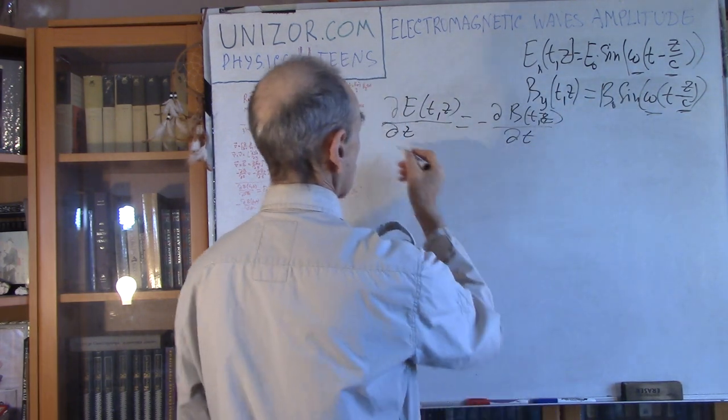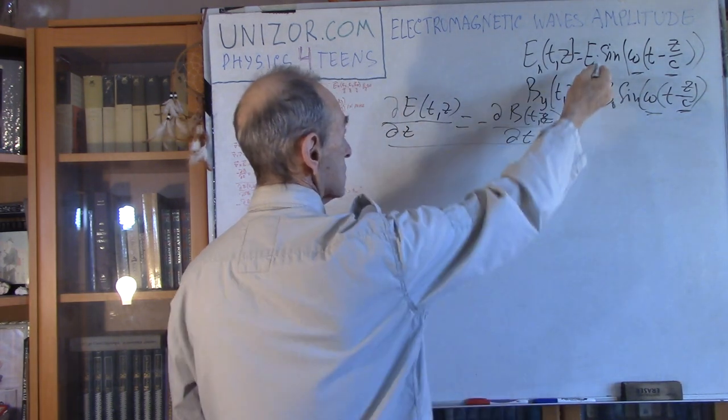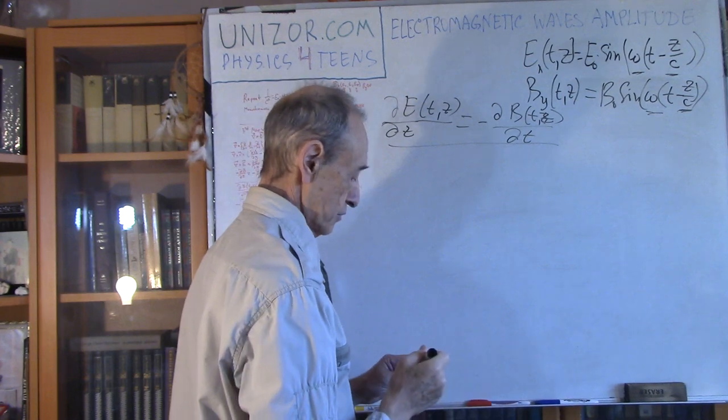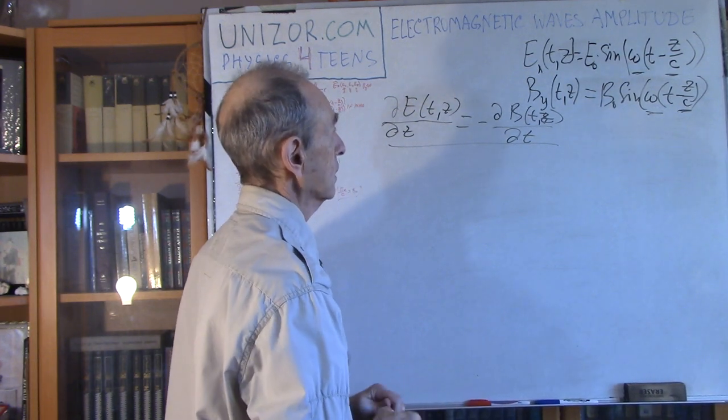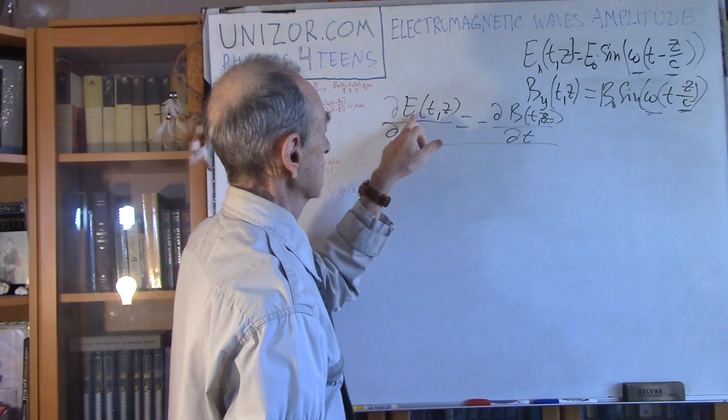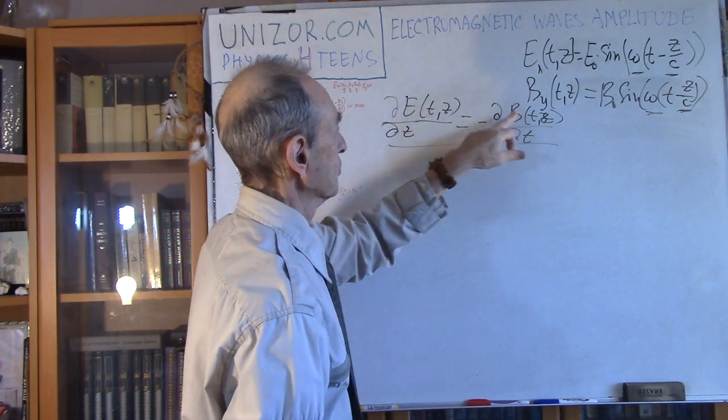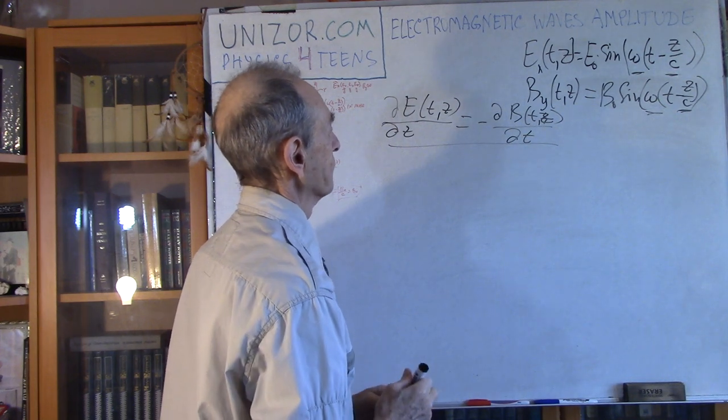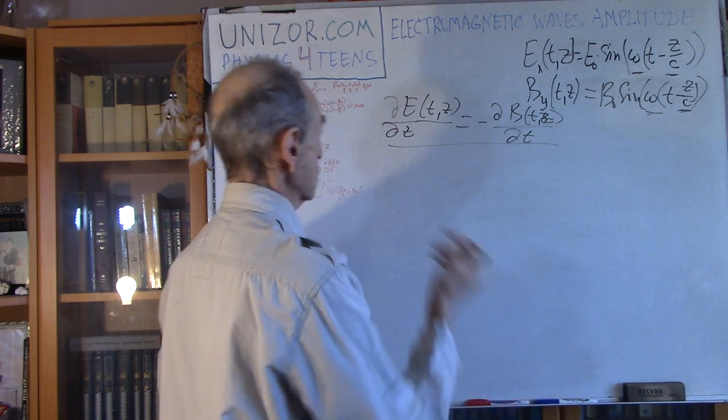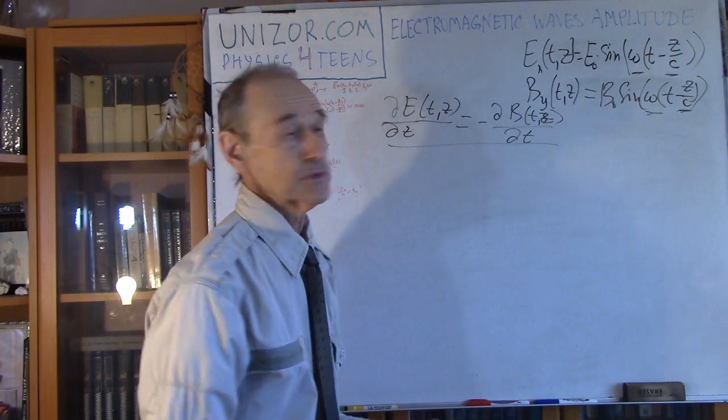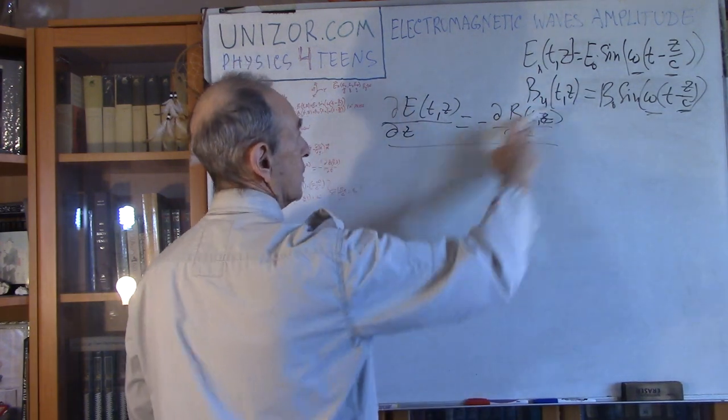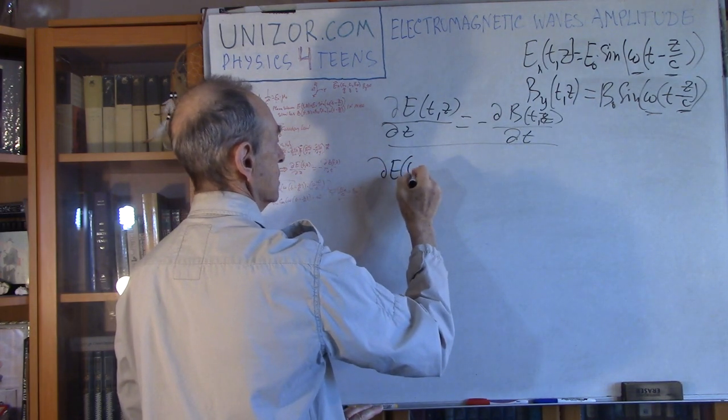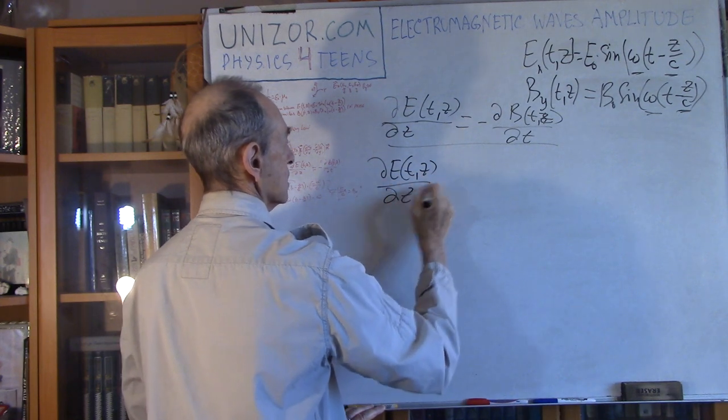This is the simplest form of the third Maxwell equation in vacuum for monochromatic plane waves. I have this equation. Now let's use it since I have explicit expressions for E and B. I decided to drop the index just for brevity. Let's have the derivatives taken.